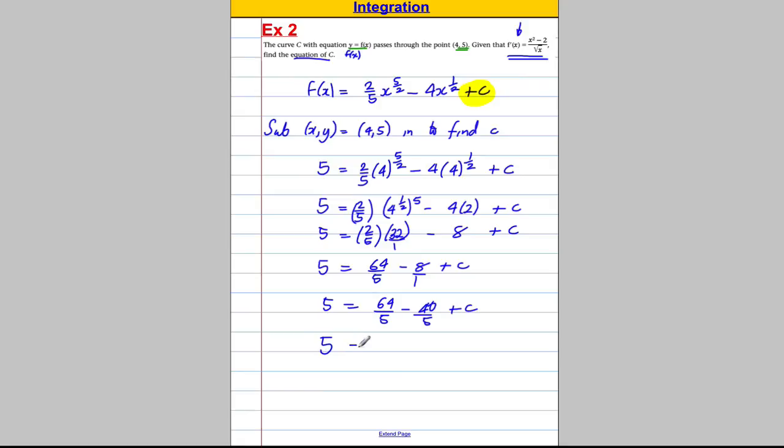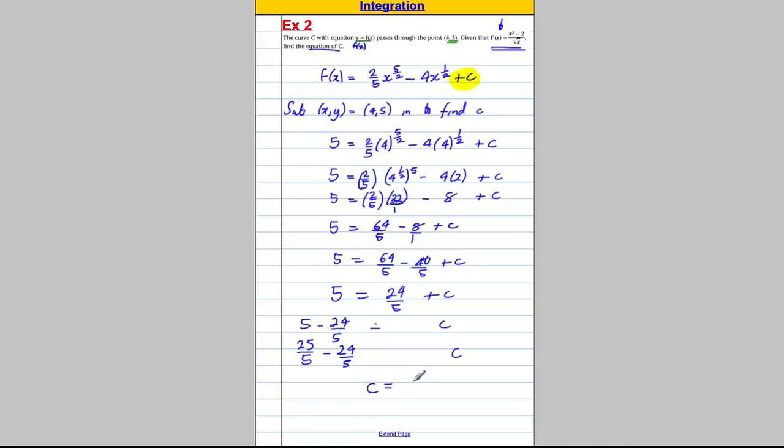5 is equal to 64 over 5, take away, 40 over 5 is 24 over 5 plus c. Therefore, c must equal 5, take away 24 over 5. So c must equal 25 over 5, take away 24 over 5, c must be equal to 1 over 5.